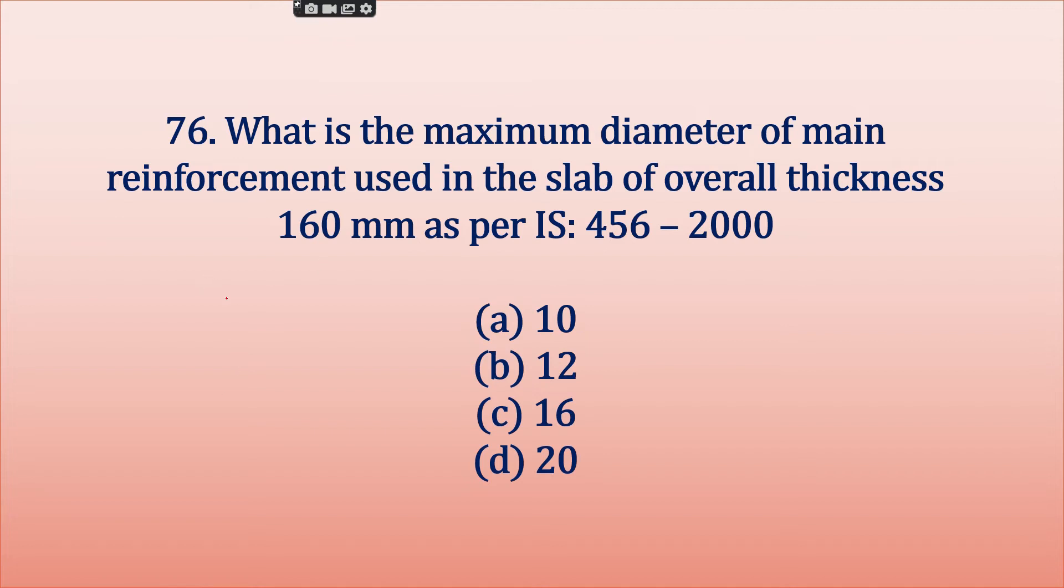What is the maximum diameter of main reinforcement used in the slab of overall thickness 160mm as per IS 456? The clause number 26.5.2.2 says that the diameter of reinforcing bar shall not exceed one-eighth of the total thickness of slab. Here the total thickness of slab, one-eighth of 160, so it's 20mm.